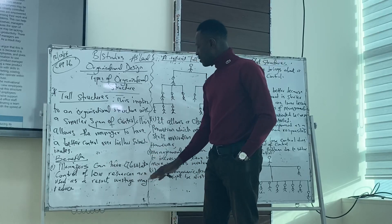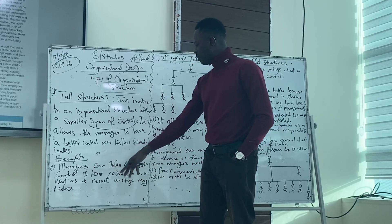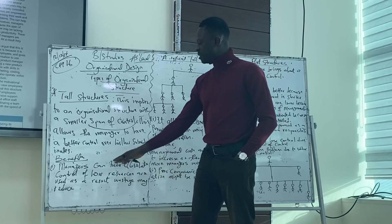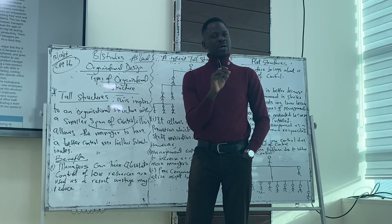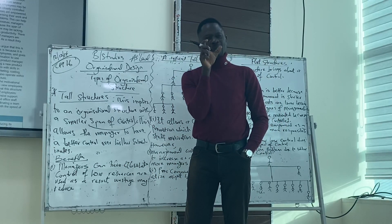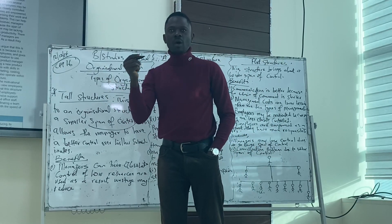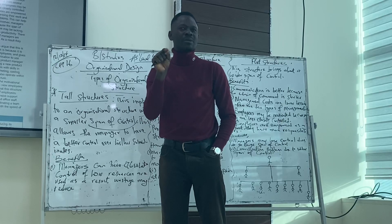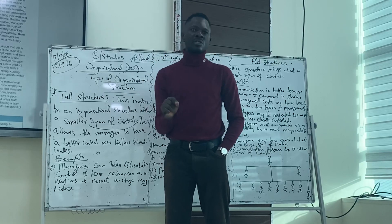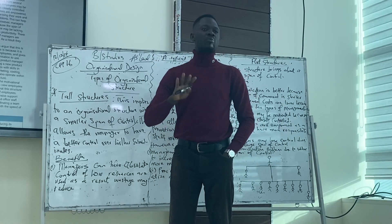So what are the benefits of having a smaller span of control? One: managers can have absolute control over how resources are being used, which might reduce wastage. The point about a smaller span of control is that managers can closely watch whatever happens within the organization and it will allow them to not waste resources.